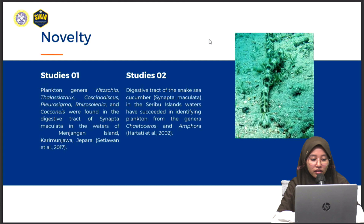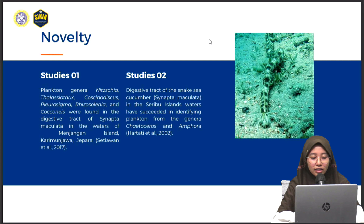The first study is by Satyawati et al., 2017, which found Phaeonia, Nitzschia, Thalassiosira, Coscinodiscus, Pleurosigma, Rhizosolenia, and Coconeis in the synaptamaculata digestive tract in Menjangan Island, Karimunjawa, Jepara.